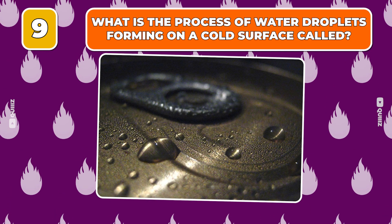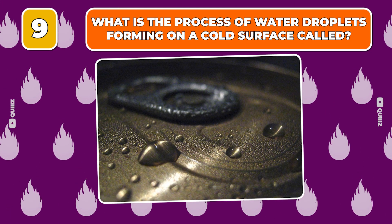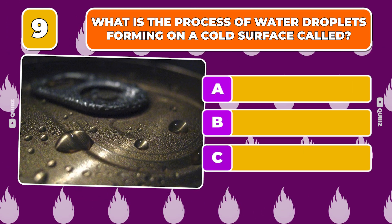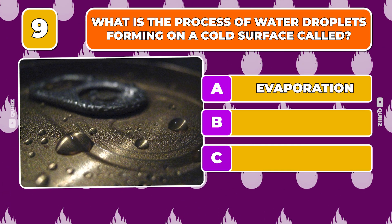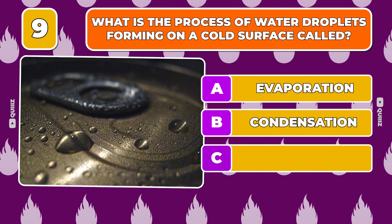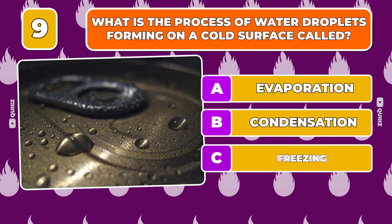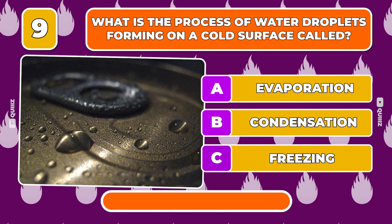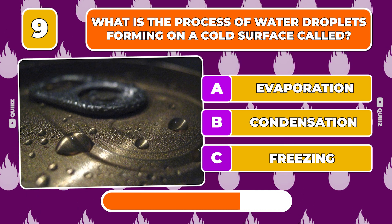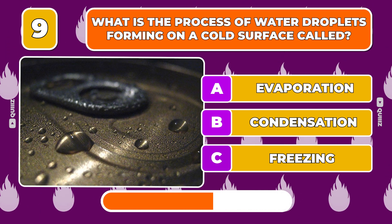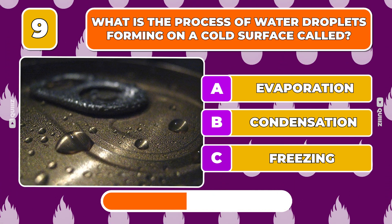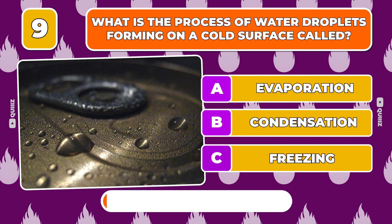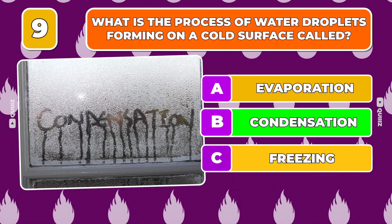Question 9. What is the process of water droplets forming on a cold surface called? Evaporation, Condensation, Freezing. The answer is condensation.